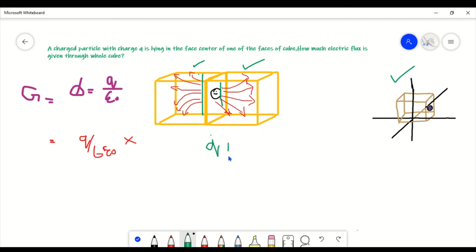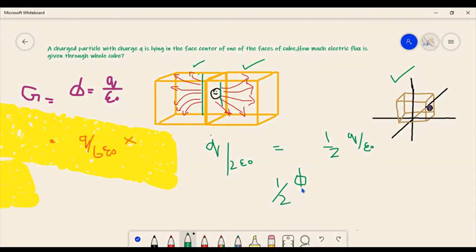Half flux is going through the half cube, so the correct answer will be Q divided by 2 epsilon naught, which will be written as Q over 2 epsilon naught. It will be half of the flux. You can also write it in a formal way. The Gaussian law for that is the correct answer for this question.